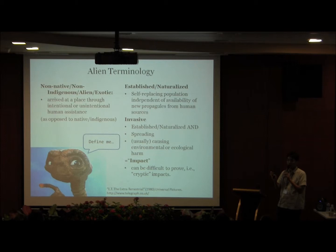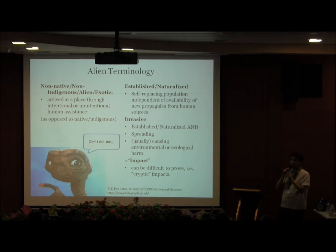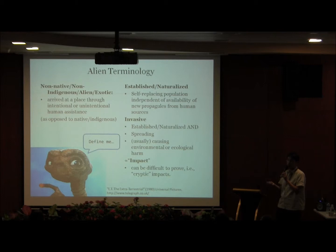An example of intentional introduction is bringing a plant through horticulture. Unintentional examples include land clearing where weeds get blown in, or tourists bringing in seeds through their footwear. We're quite clear on this definition. It's more a matter of having enough information to determine a species is not native. For plants, we have a good checklist of native species, so it's quite easy to determine if a species is native or alien. If we don't know, we call it cryptogenic.